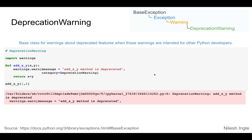A deprecation warning is a warning to the user that a particular method has been deprecated — that is, no longer in use in future versions — and that there is an alternative way they should use instead, quitting the method that generated this warning.